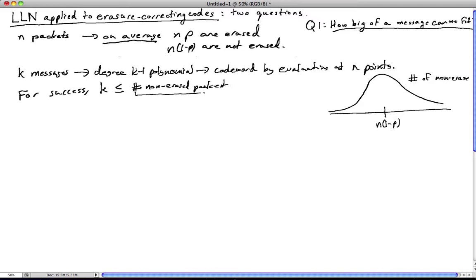We know that k has to be less than or equal to the number of non-erased packets. Now, this thing, the number of non-erased packets, this is random. So whether this is true or not is also random. So we would like this to be true often.